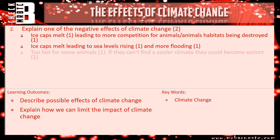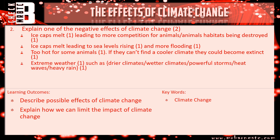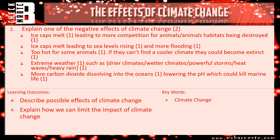It becomes too hot for some animals — that's your first mark. If they can't find a cooler climate, they could become extinct — that's your second mark. For extreme weather, give an example: drier climates, wetter climates, powerful storms, heat waves, heavy rain — any one of those alongside extreme weather is your explanation. Finally, more carbon dioxide dissolving into the oceans gets you one mark; lower pH which could kill marine life is your explanation.